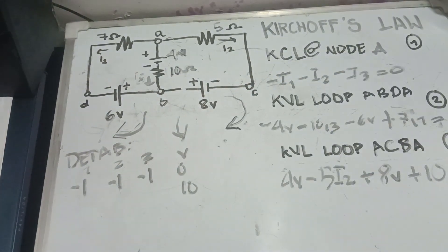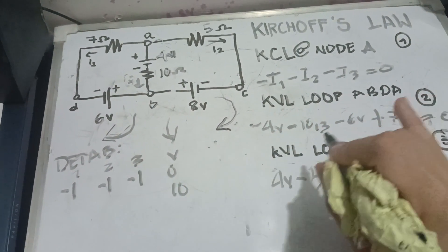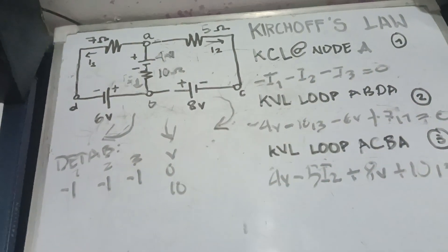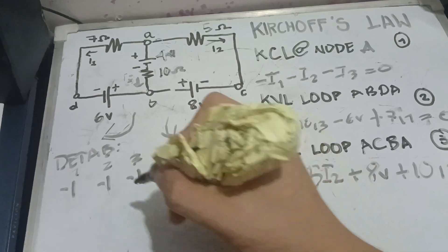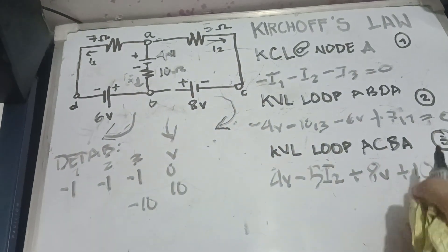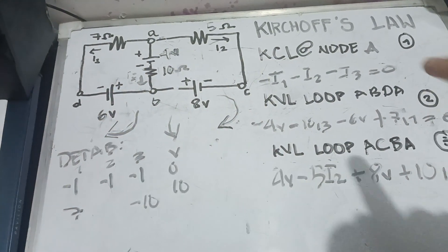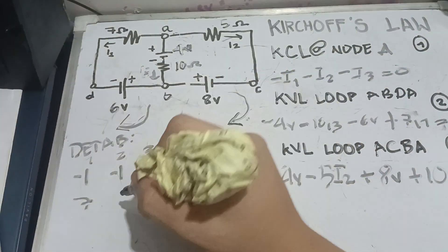You're following? We're just transposing the value. So, it should be negative 10 volts, but we're transposing it to the right side. So, it's going to be 10. We need to change the sign. Then, negative 10 I3. So, it's going to be negative 10. Positive 7 I1. So, it's going to be 7. We don't have any I2 in our KVL loop ABDA. So, we're going to write 0.